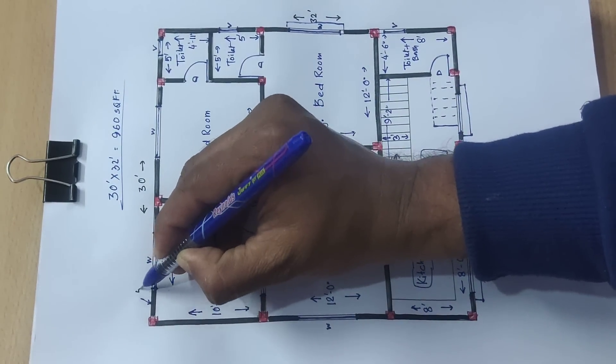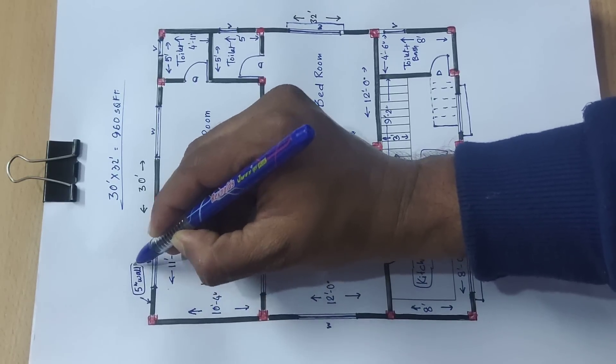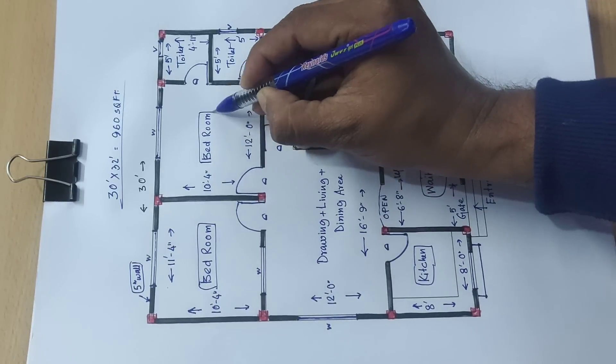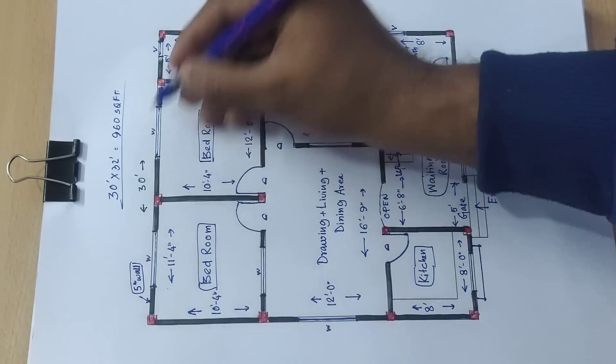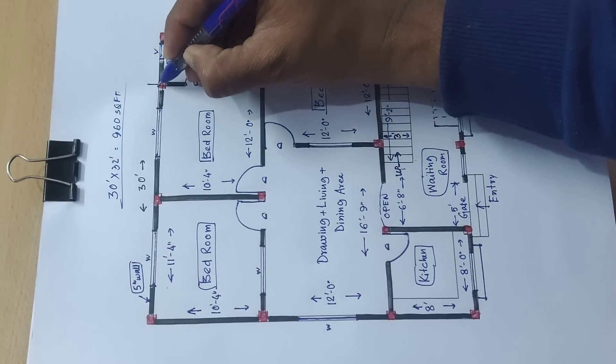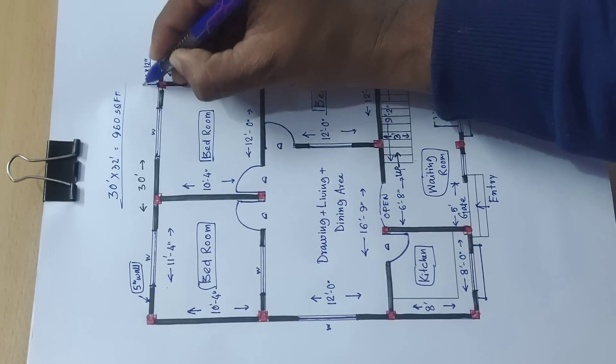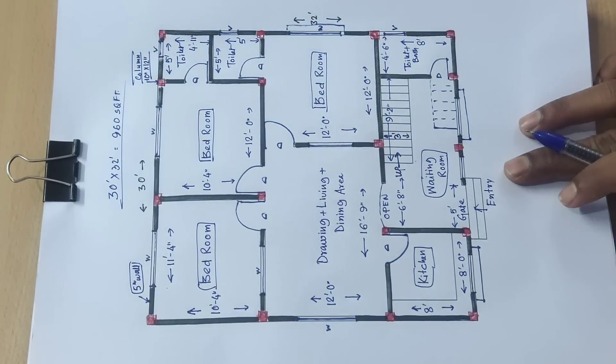Complete. The outside wall is 5 inch wall. Bedroom. And the column size here is 10 inch by 12 inch column.